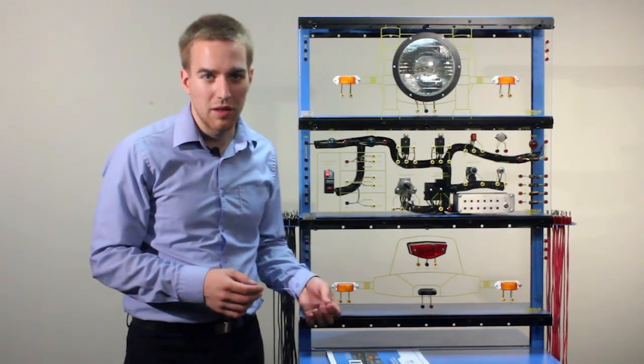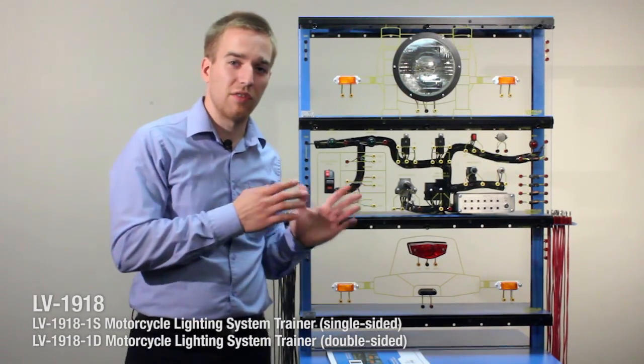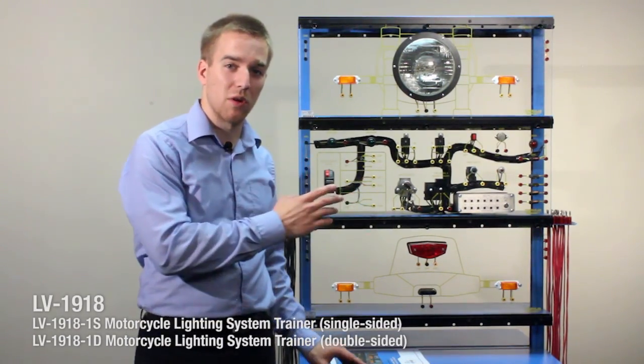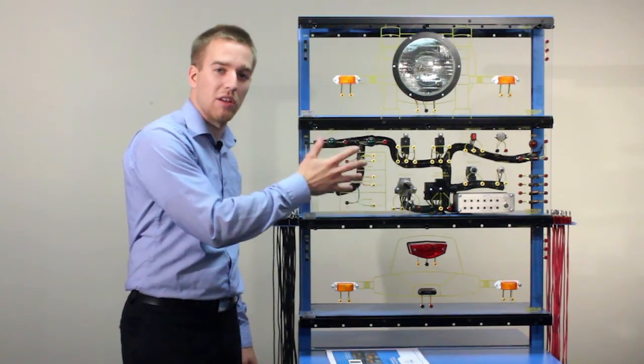Now let's move on to a different model. This is the LV 1918 1S and this is for light vehicles, specifically motorcycles. So all the components on here are components you would find typically on a motorcycle.